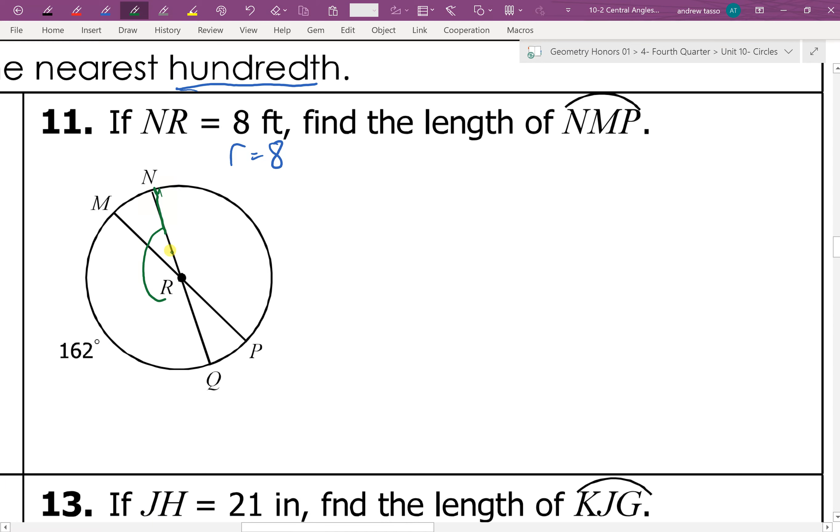So here we see a diameter. When we have a diameter, we know that the arc that spans across it has to be 180 degrees. So we have 180 subtract 62 leaves 18 degrees for the measurement of this angle and therefore this arc.